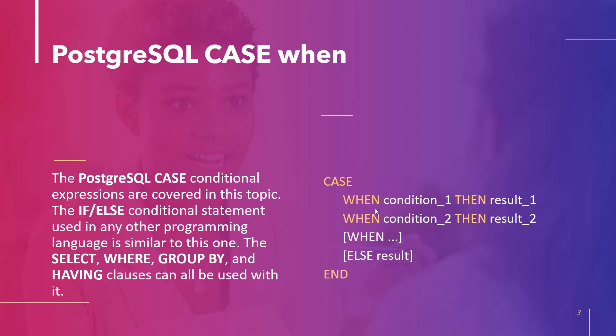The syntax of the CASE clause is as follows: CASE WHEN condition1 THEN result1, WHEN condition2 THEN result2, and so on, ELSE result END. The CASE keyword specifies the beginning of the conditional expression. We specify the condition in the WHEN part and the result in the THEN part. Since the condition returns a boolean, if it evaluates to true, the result in the THEN part is returned. If false, subsequent WHEN conditions are checked; otherwise the ELSE result is used. Finally, we end the CASE expression with the END keyword.